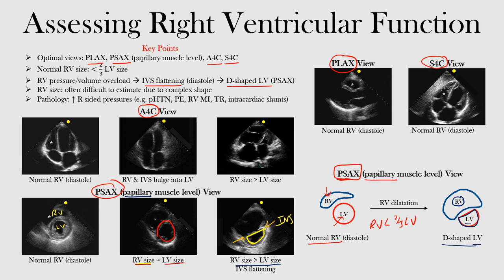The right ventricular size is often difficult to estimate due to its complex shape — we can't always get a good view, but there are some ways to do it. This is bedside echo, so we're not always trying to do a detailed exam; we're just trying to assess right ventricular function and whether there's interventricular septum flattening. We want to understand the patient's underlying pathology — whether it's from pulmonary hypertension, pulmonary embolism, right ventricular MI, tricuspid regurgitation over time, or intracardiac shunts such as a left-to-right shunt causing increased right ventricular pressures.